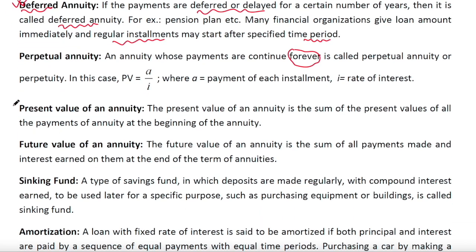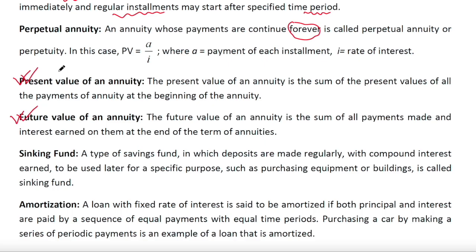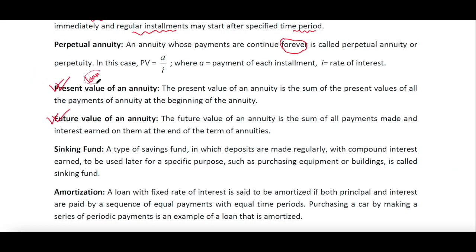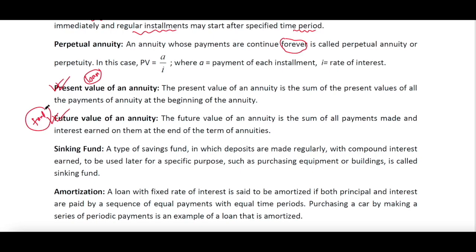Present value of an annuity is the total amount of any kind of loan or fund. Present value is related to any kind of loan — it is the amount of the loan. Future value is the amount of any kind of fund.